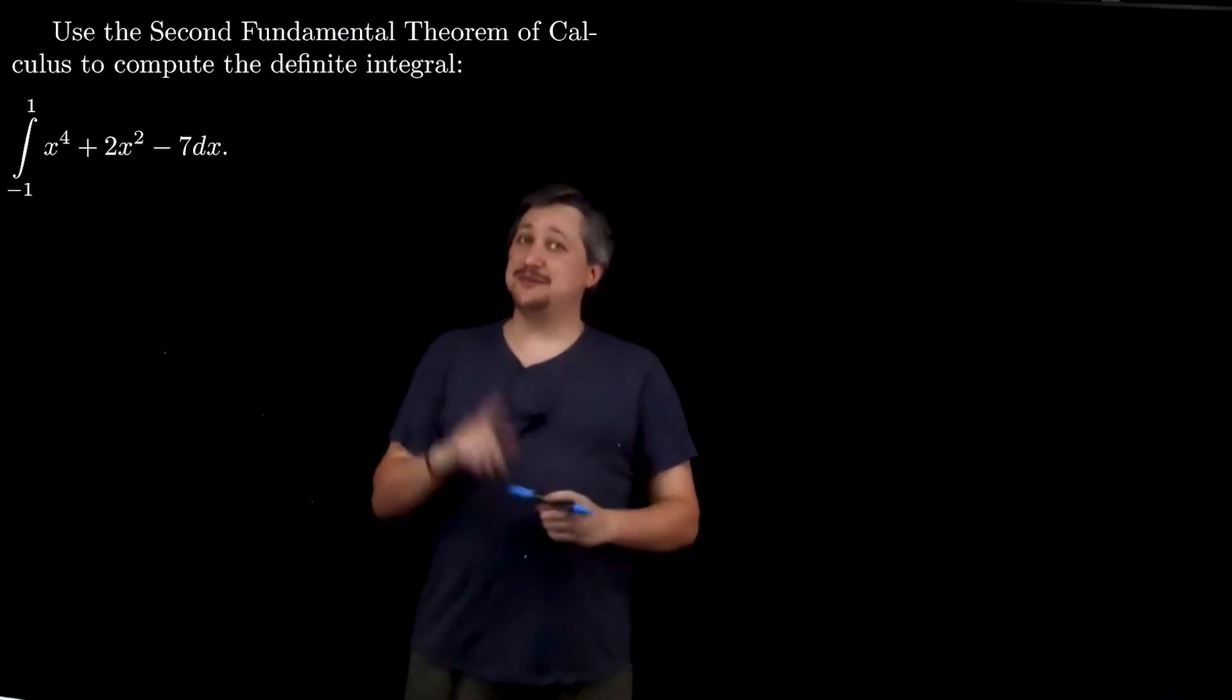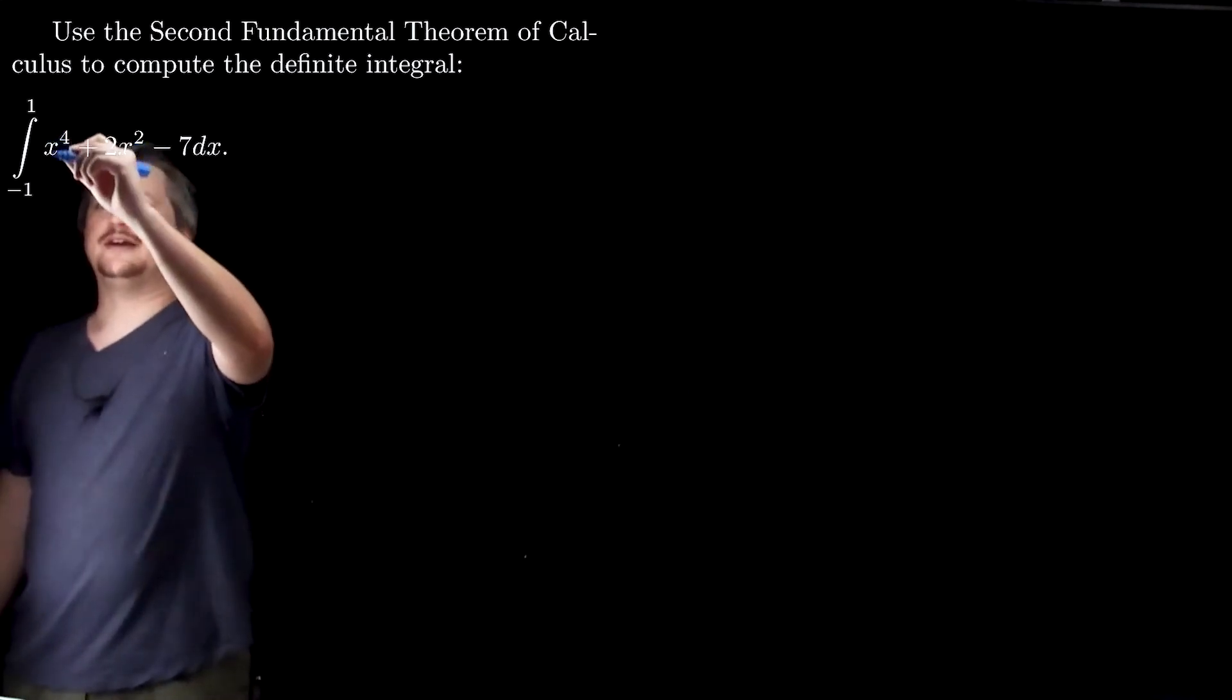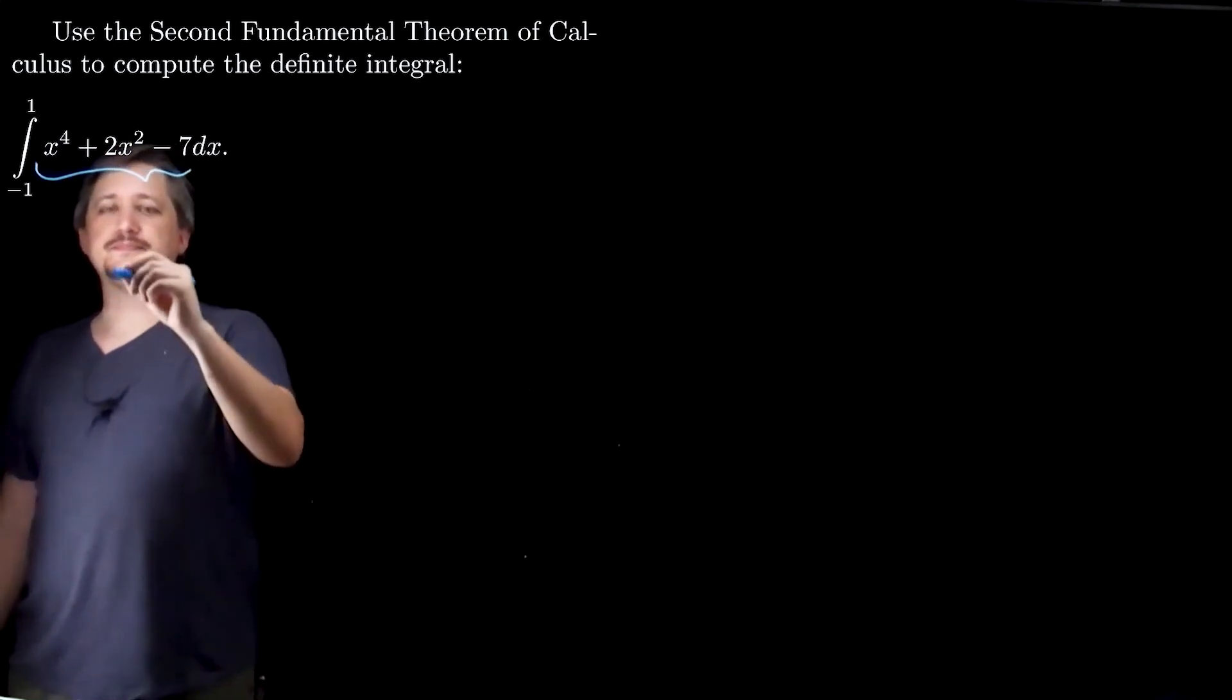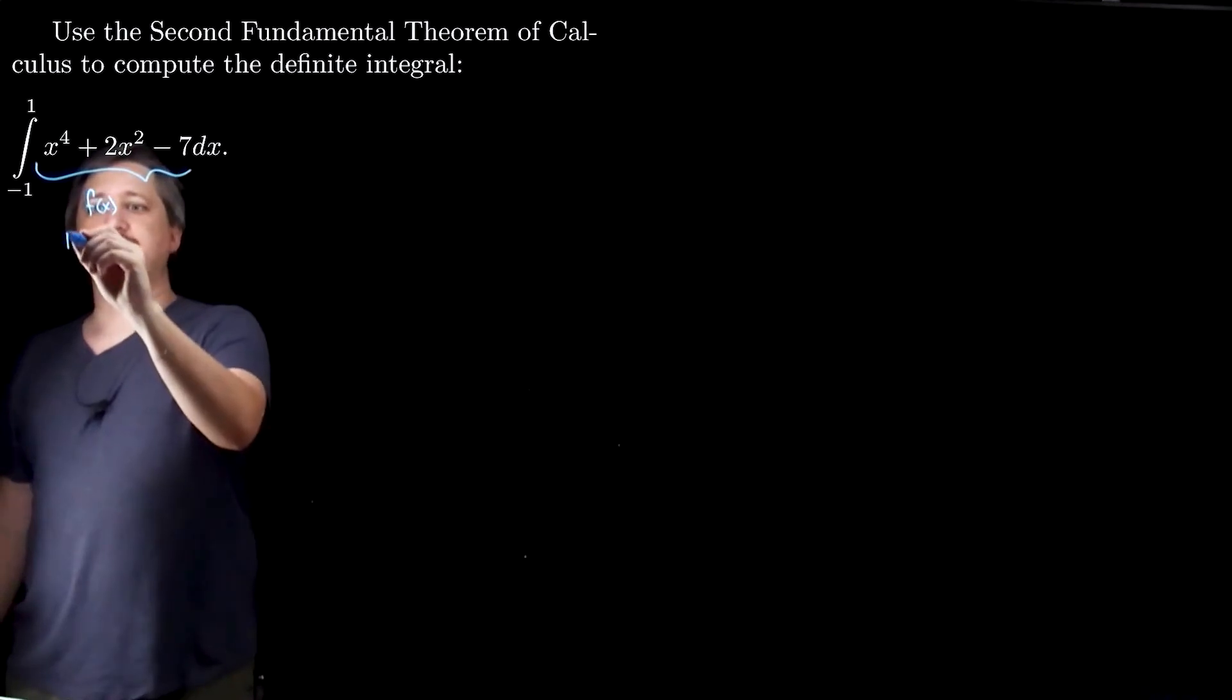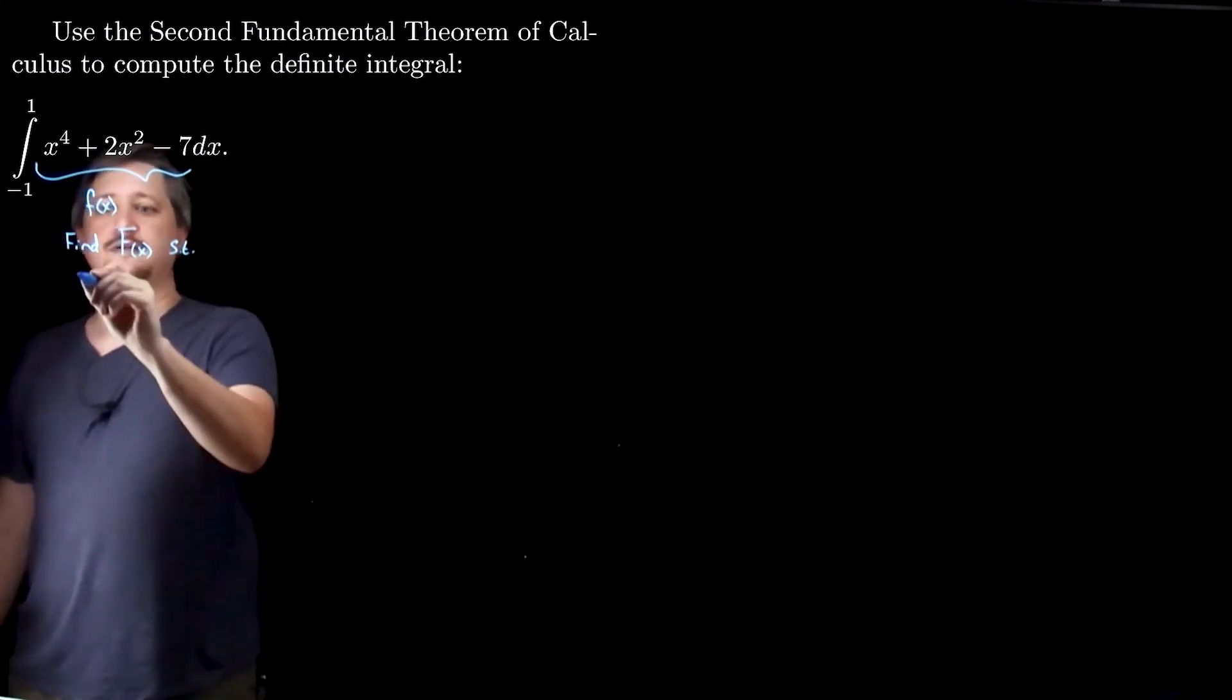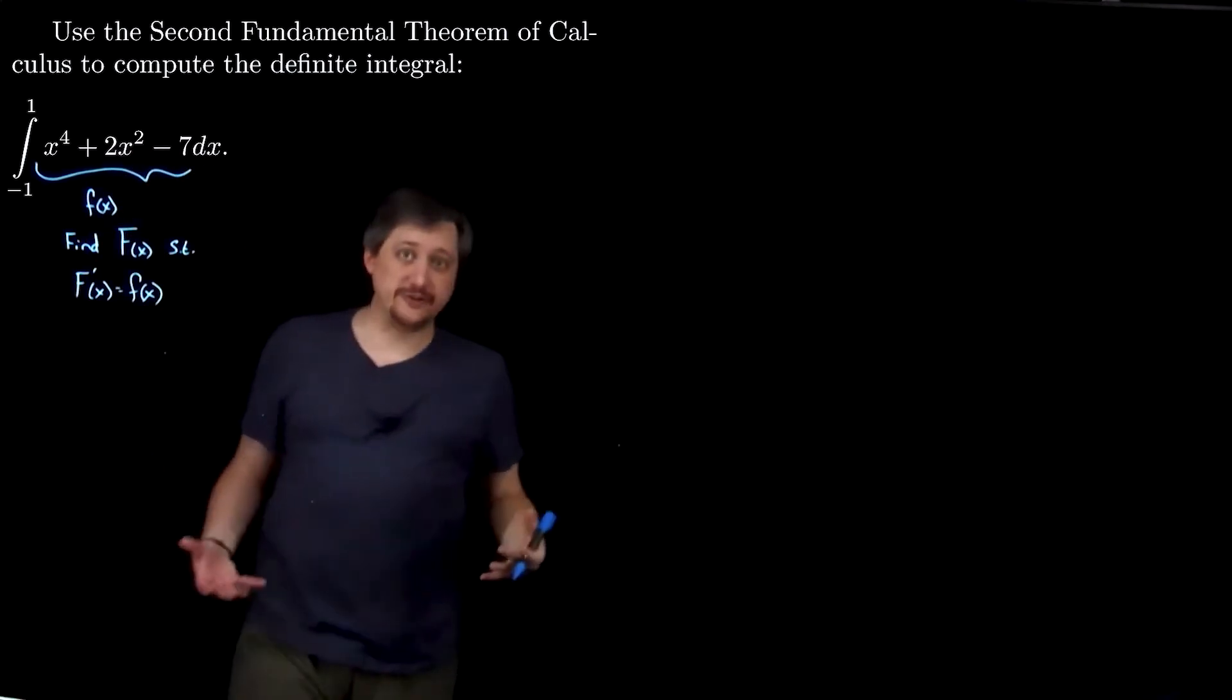But what the second fundamental theorem of calculus tells us is that if we can get, so if we have this thing here, we'll call this thing little f of x. If we can find some big F of x such that F prime of x is little f of x, in other words, if we can find an antiderivative,